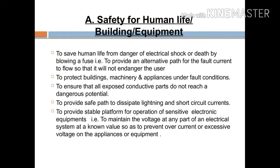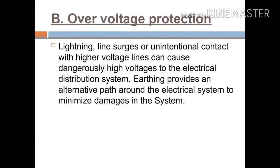The second purpose is overvoltage protection. Lightning, line surges, or unintentional contact with higher voltage lines can cause dangerously high voltages to the electrical distribution system. Earthing provides an alternative path around the electrical system to minimize damage.